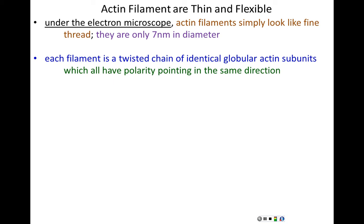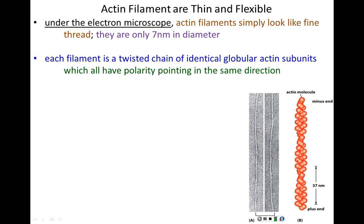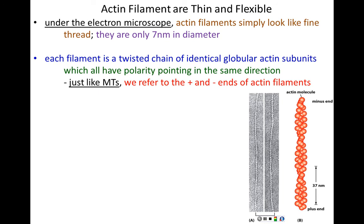Like microtubules, actin filaments have polarity — they have a plus end and a minus end. Actin filaments are made of globular spherical monomers that come together to create a single strand or filament with polarity. The difference is that actin filaments are not hollow and not made up of protofilaments lined side by side creating a hollow tube. Instead, a smaller number of protofilaments are wrapped around each other, almost braided. Actin filaments are thinner, shorter than microtubules, and much more flexible.